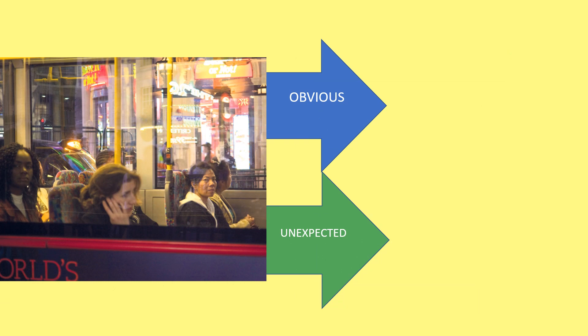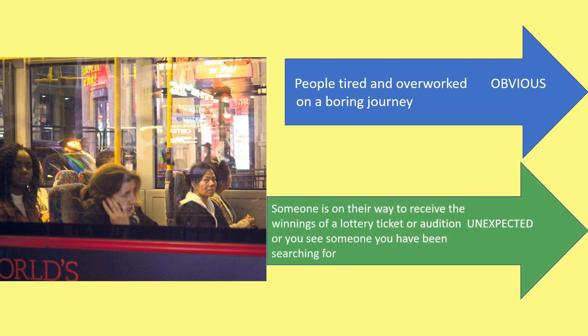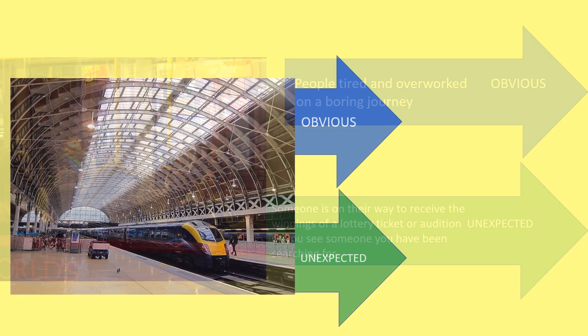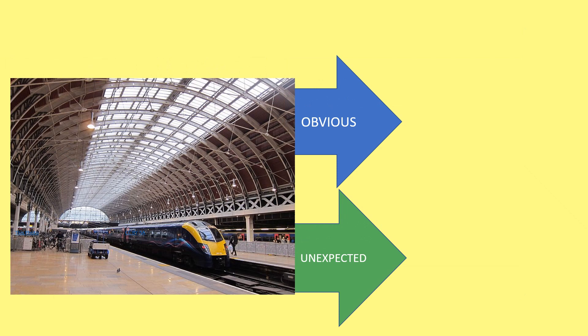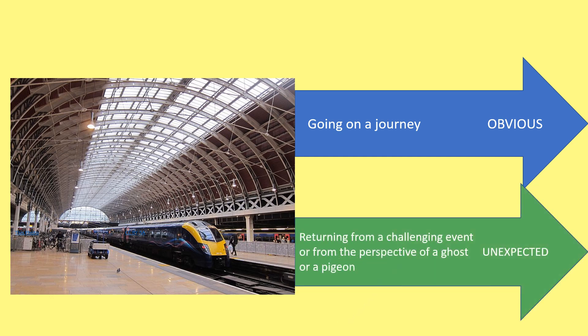What would be the obvious things to say about these people on a bus? It brings to mind people who are tired and overworked or maybe on a very boring journey. Unexpectedly, someone's on their way to receive the winnings of a lottery ticket or an audition, or you see someone you've been searching for. Lastly, what would be obvious about this train station? The obvious thing would be that someone's going on a journey. Maybe you could change the story so that someone's returning from a challenging event, or write it from the perspective of a ghost or a pigeon.